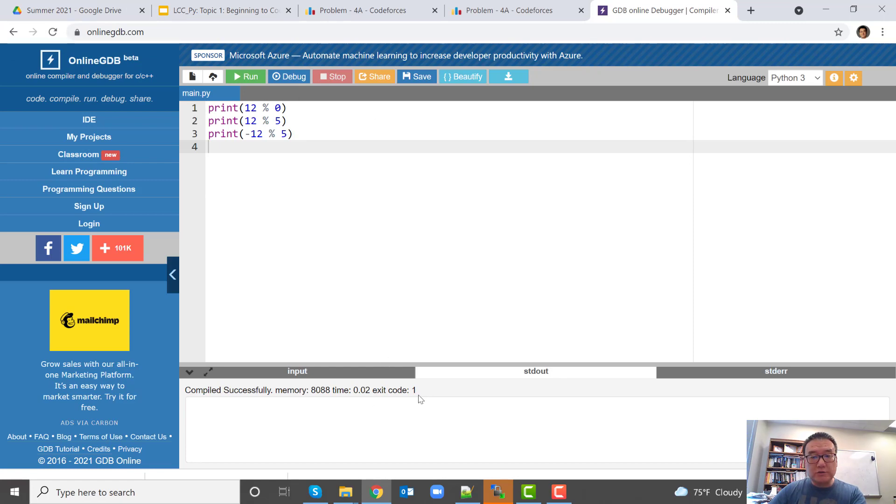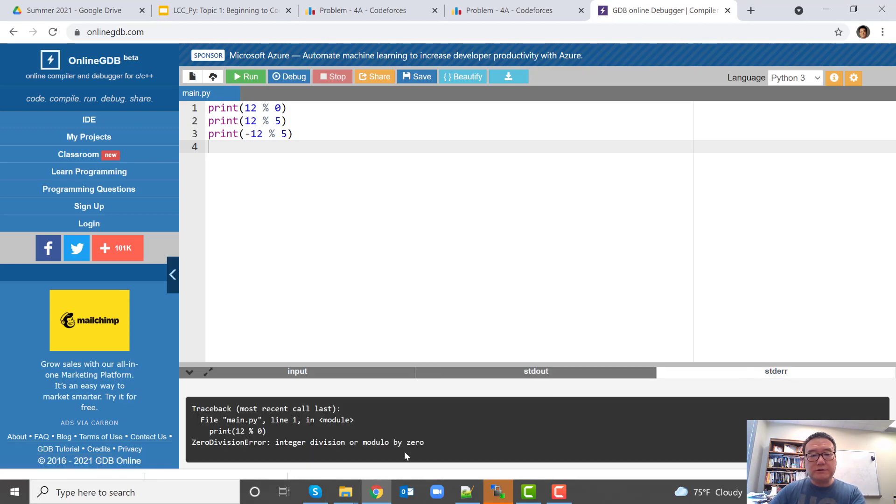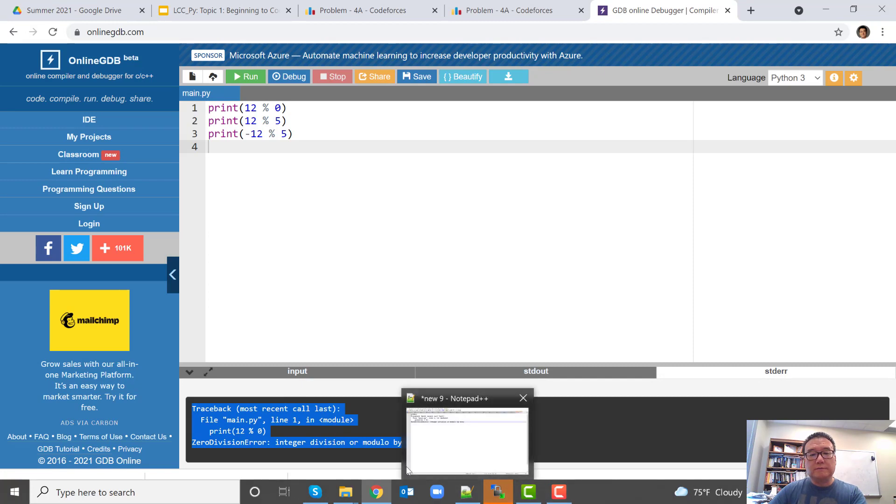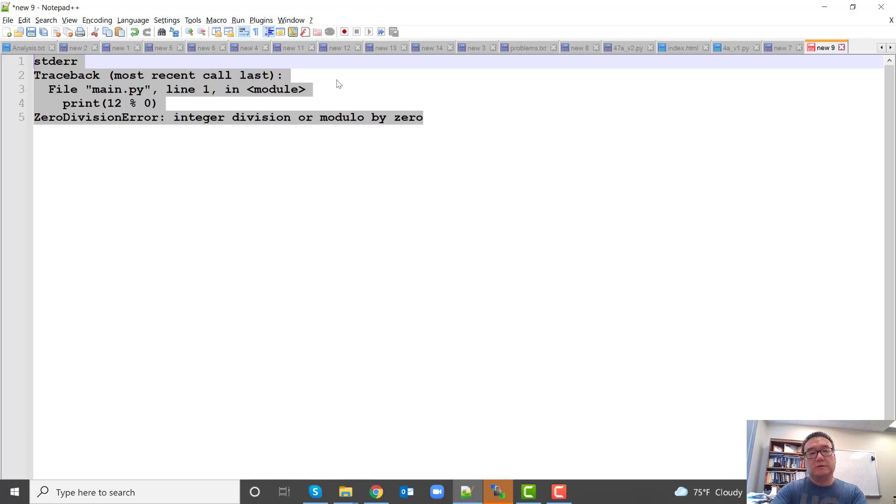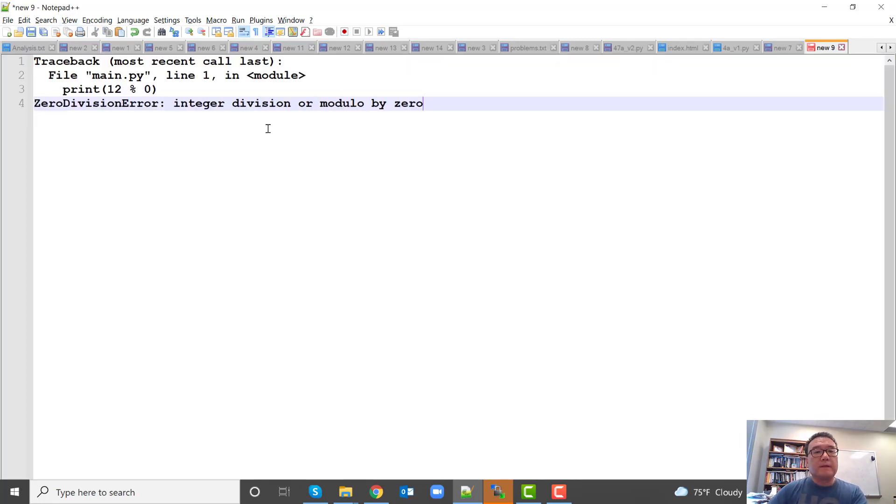Let's run this. So we get an exit code 1. That means there's an error. So we click on the STD error. We see an error message. Let's copy this error message out. Hopefully this will be easier to see than in the online GDB window. So what it says is the line 1, the error occurs at line 1, so print 12% 0. And the error is a 0 division error, integer division or modular by 0.